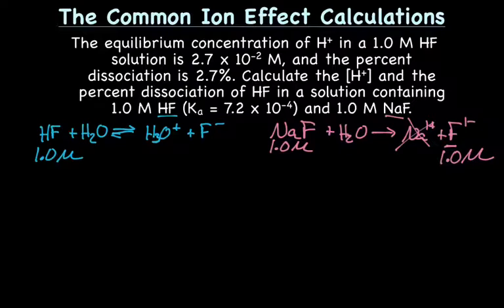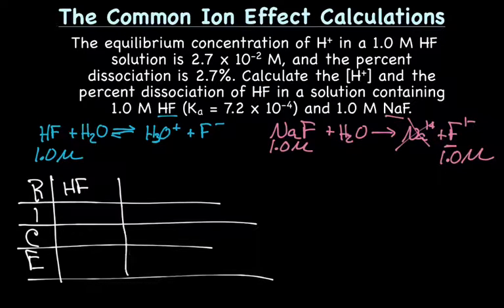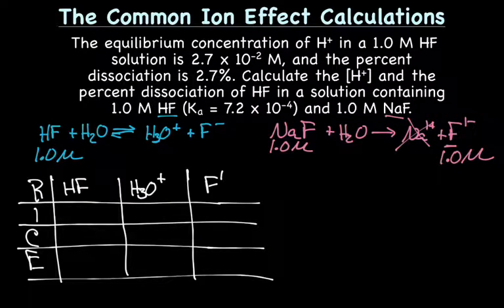So now let's set up our RICE table. And for our reaction, we have HF and H3O and F-. So our starting concentration of HF is 1.0 molar. We also have a starting concentration of F. It's also going to be 1.0 molar. And our starting concentration of hydronium ion is zero.